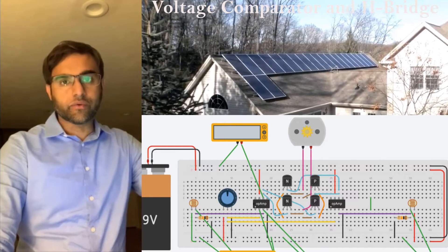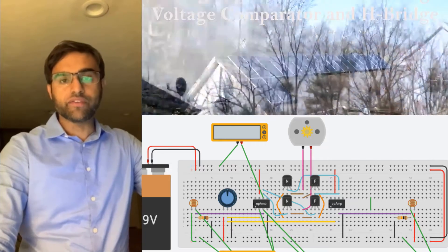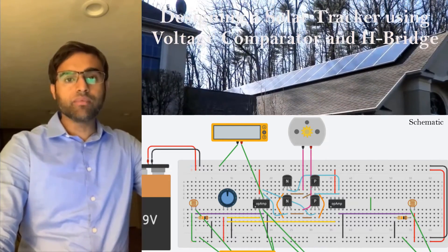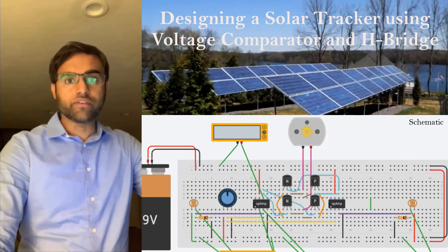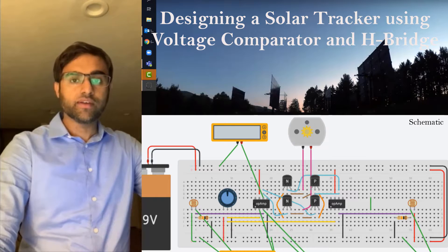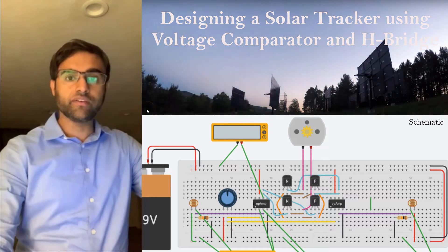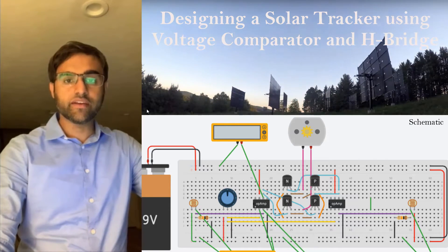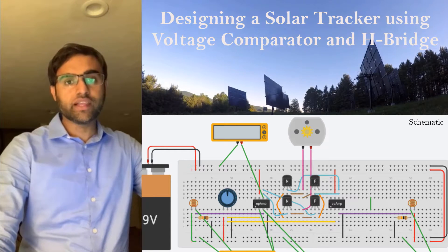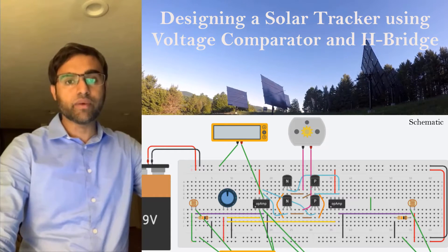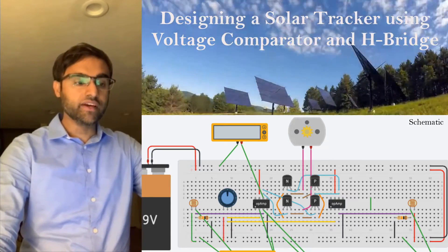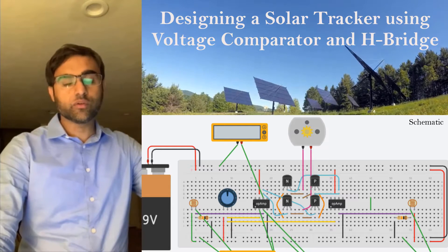We all know that solar panels are great for the environment. The problem with solar panels is they are fixed — they don't move as the sun moves around. The sun rises in the east and sets in the west, and during this time, solar panels are fixed and they're not utilizing all of the energy emitted by the sun during the day.